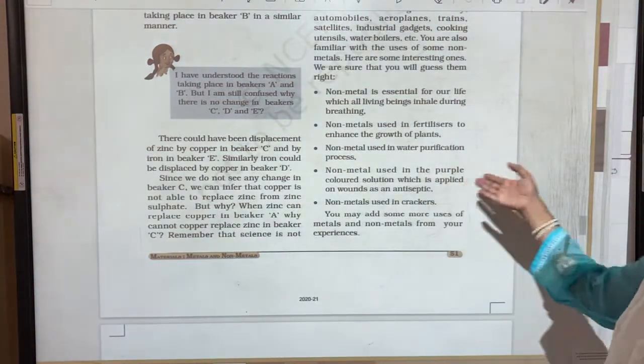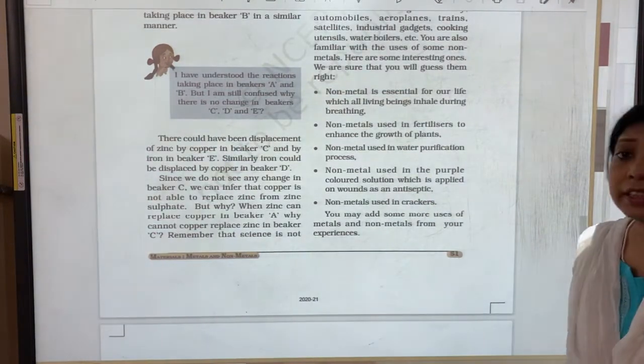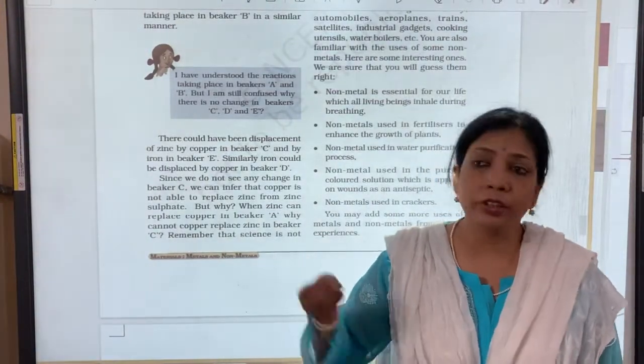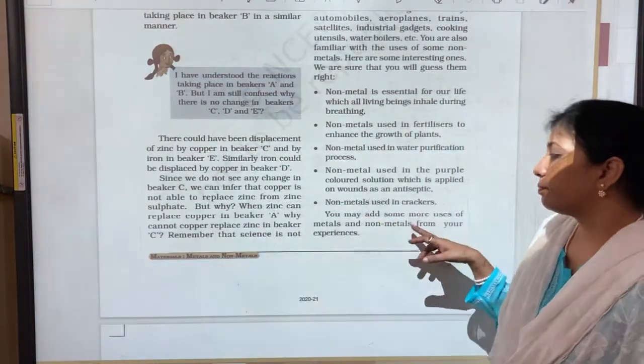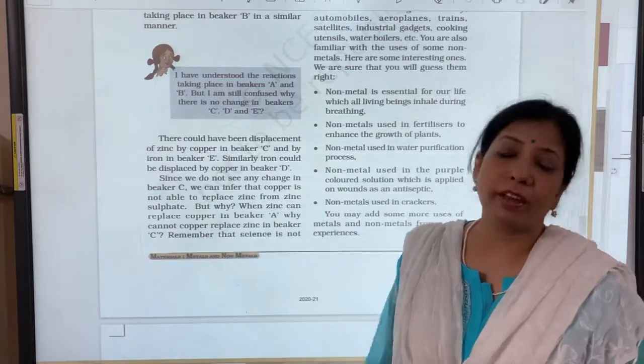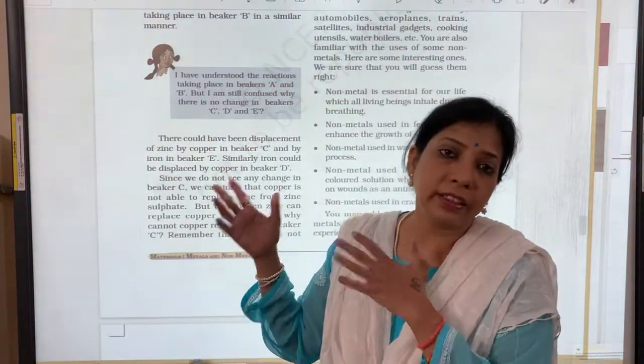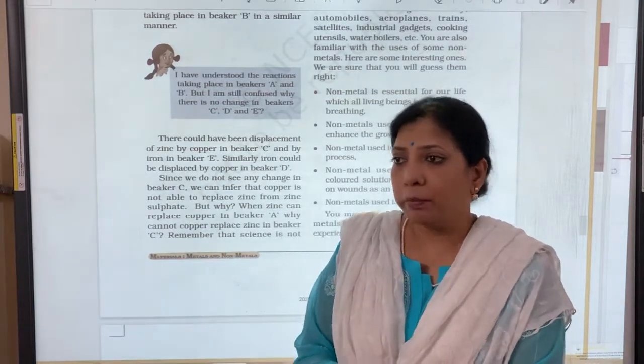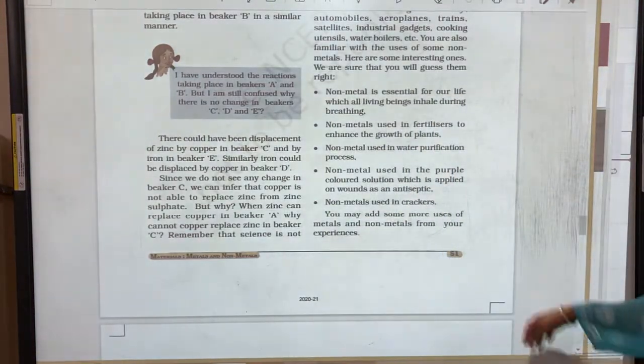Then next is non-metals used in the purple colored solution which is applied on wounds as antiseptics. Yes it is iodine, iodine tincture. That is iodine which is a non-metal. Lastly, you must be loving it, many of you might be loving the crackers, bursting crackers. So it is sulfur and phosphorus. Predominantly it is the sulfur. Even the gun powder and ammunition, that also contains 10% of sulfur which is a non-metal.